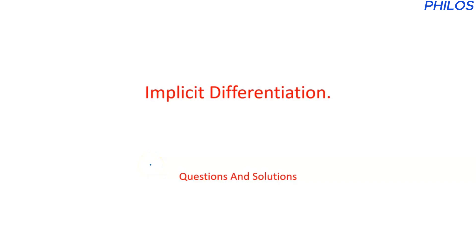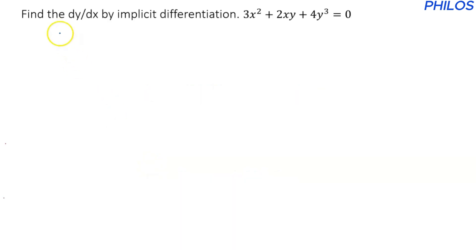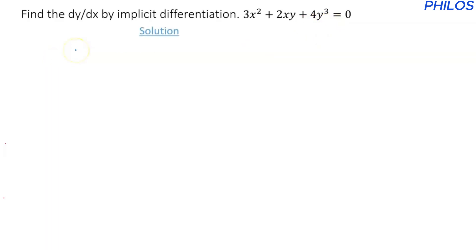Let's take a question on implicit differentiation. The question says: find dy/dx by implicit differentiation for 3x squared plus 2xy plus 4y cubed equals 0. To solve this, let's first rewrite the equation: 3x squared plus 2xy plus 4y cubed equals 0.